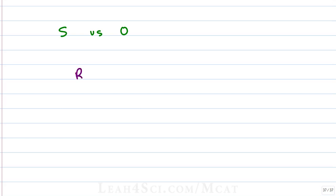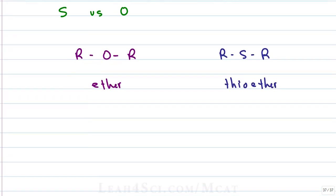Going back to our basic functional groups, if we have an oxygen between two R groups we get an ether. If we have a sulfur between two R groups, we get a thioether. This is not the bond we're looking for in a sulfur linkage.